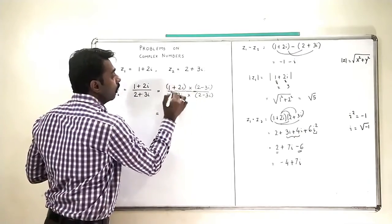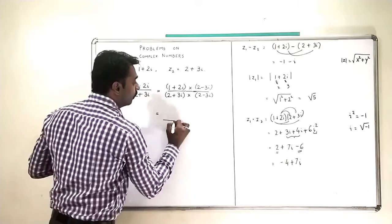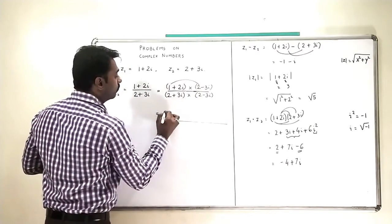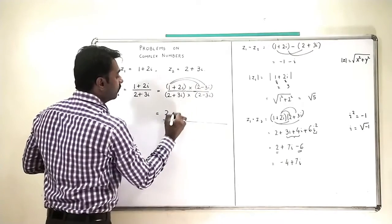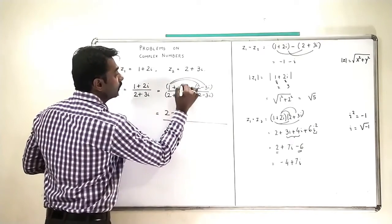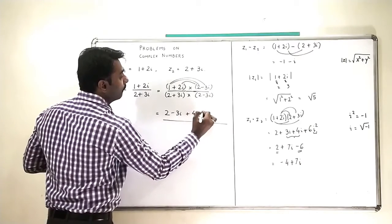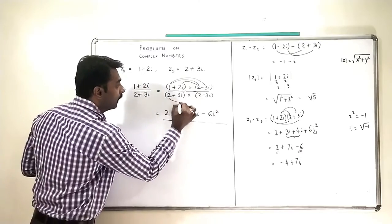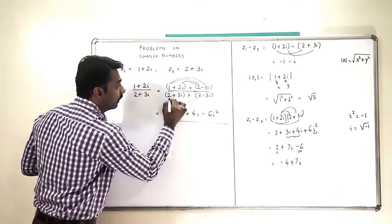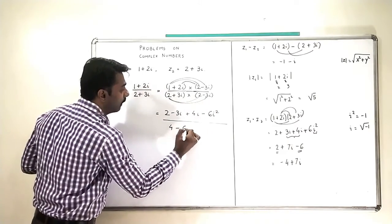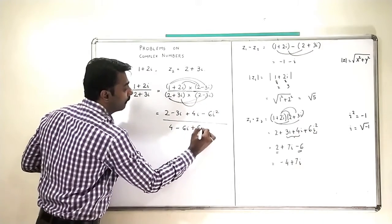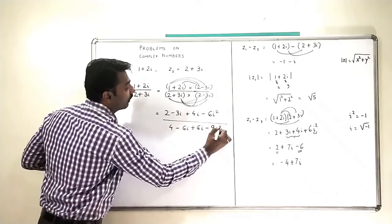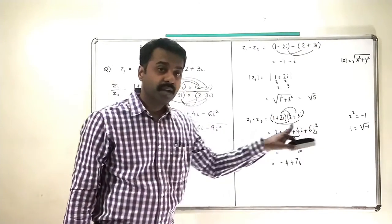So I will multiply these two complex numbers, upstairs and downstairs. Doing the calculation for the numerator: 2 minus 3i plus 4i minus 6i squared, divided by 4 minus 6i plus 6i minus 9i squared.